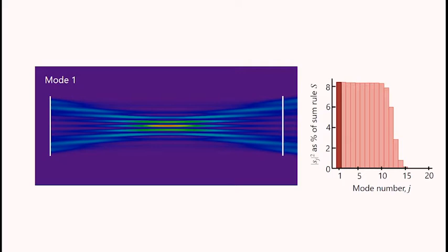So here's the most strongly coupled one. And on the right, we're showing the magnitudes of the power coupling strengths, so the modulus squared of the singular values, as a percentage of the sum rule. So this first one takes over just 8% of the sum rule.